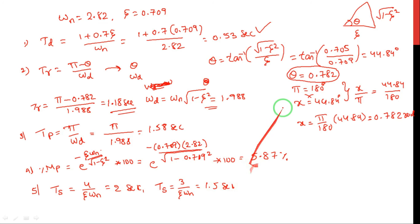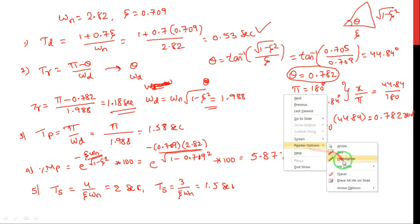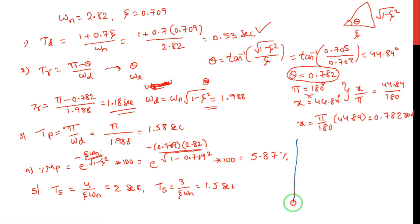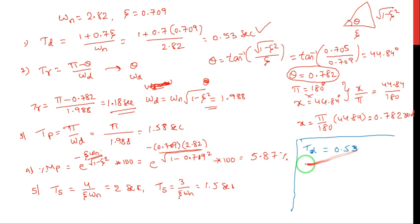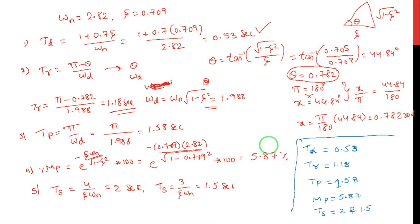This is the solution of the given problem. To summarize the answers for all time domain specifications: TD equals 0.53 seconds, TR equals 1.18 seconds, and TP equals 1.58 seconds. This is the procedure to find the time domain specifications for the given transfer function. If you have any doubts, please comment in the comment box. Thanks for watching this video — see you in the next class.